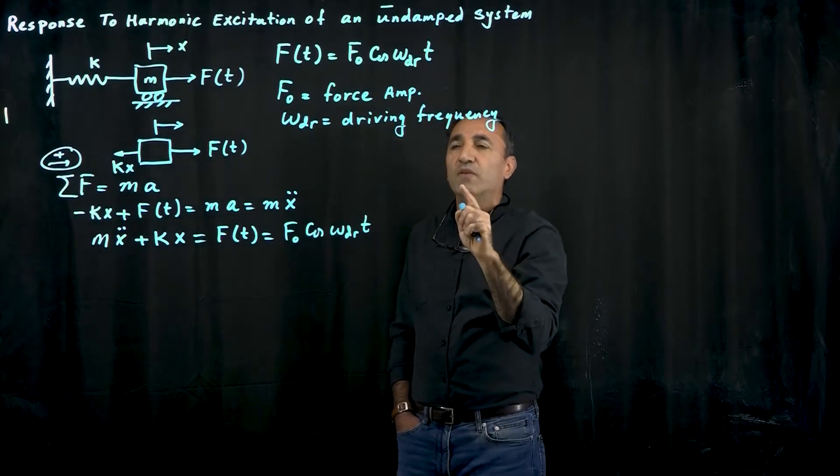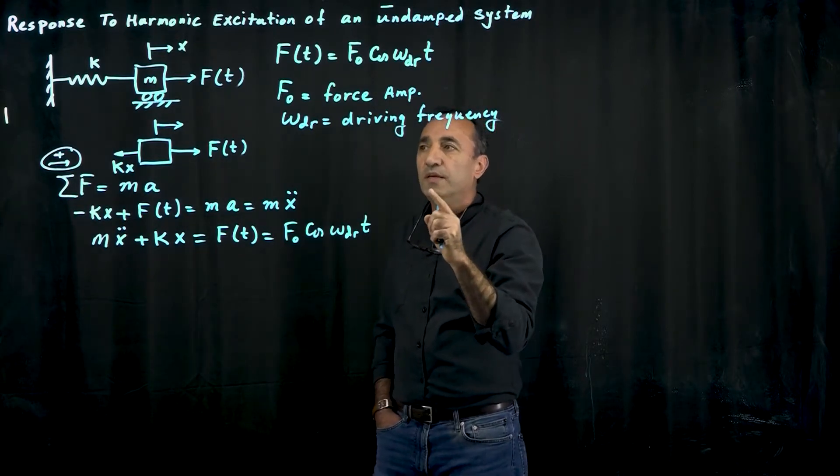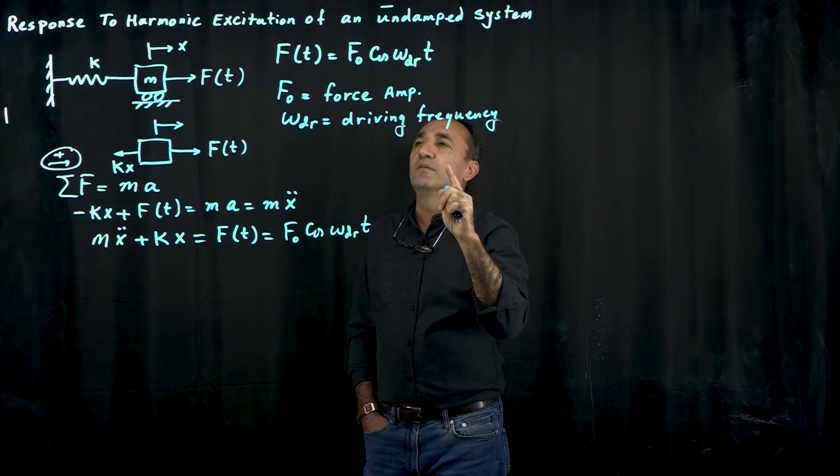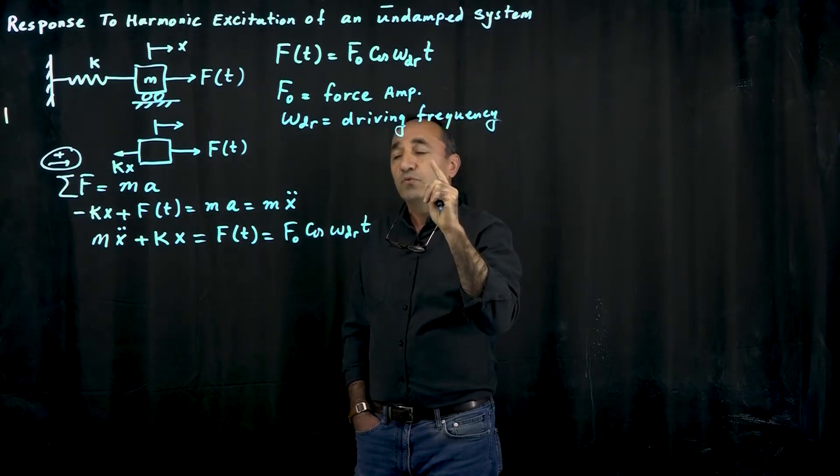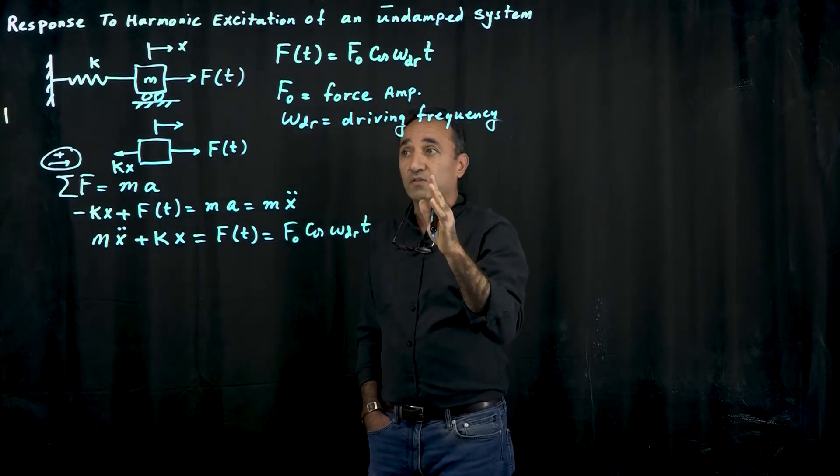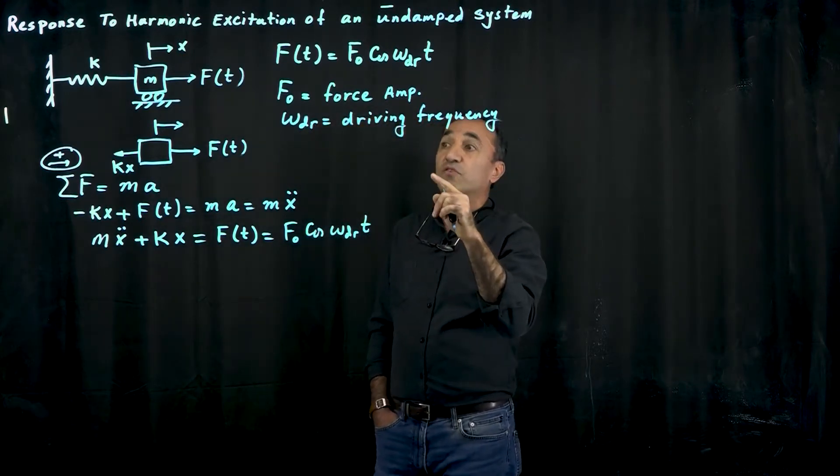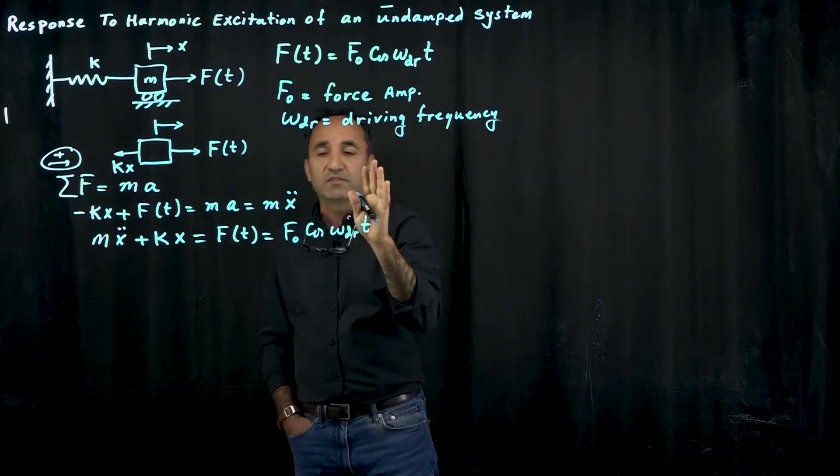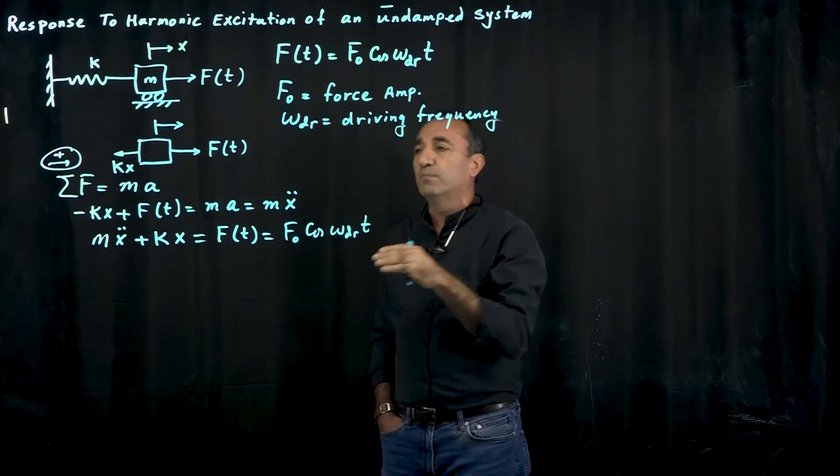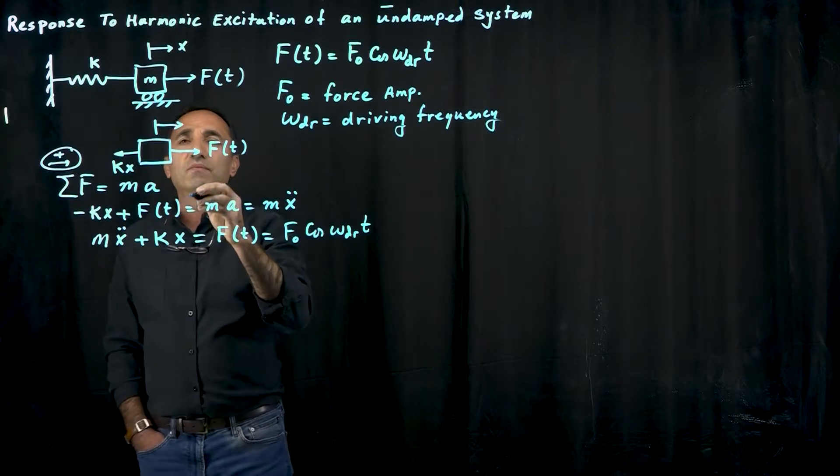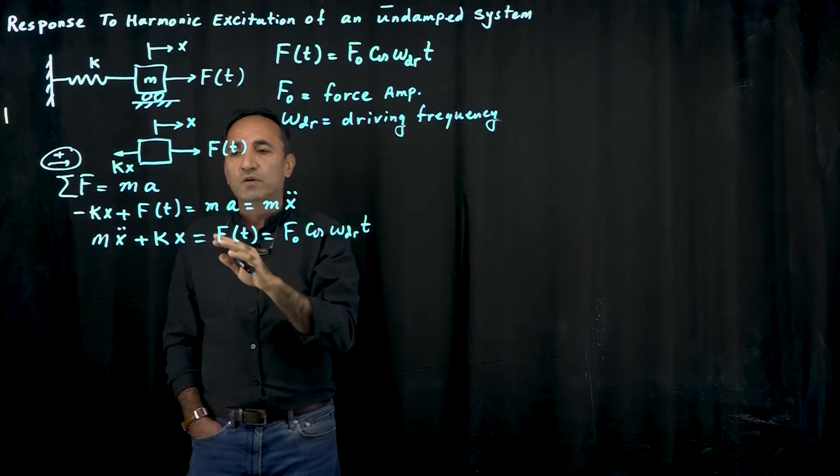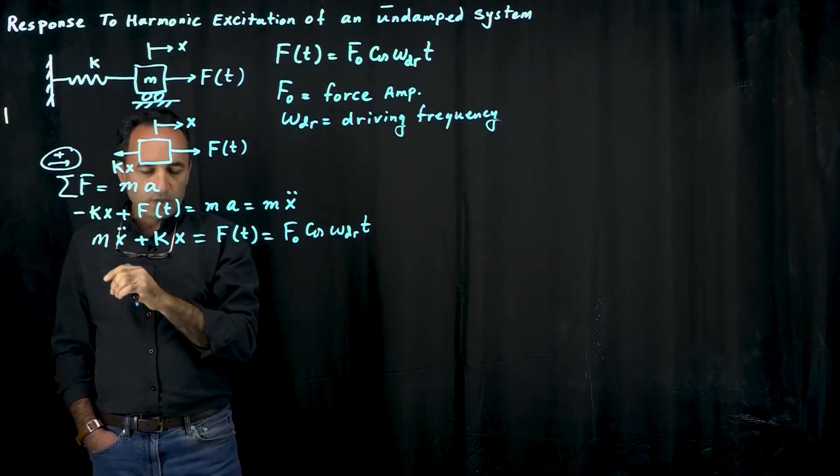Omega_dr is the driving frequency or the input frequency, and these systems are very important because if the driving frequency is very close to the natural frequency the system will go crazy and that's called resonance. If the driving frequency is exactly equal to natural frequency, that's a disaster for a mechanical system. If it's very close to it we get the phenomenon of the beat frequency.